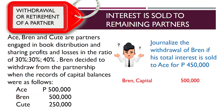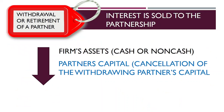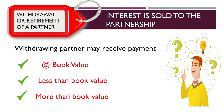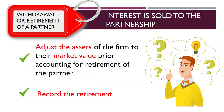But if the interest of the withdrawing or retiring partner is sold to the partnership, it will result in the reduction of the firm's assets — either cash or non-cash — along with the cancellation of the withdrawing partner's capital. The withdrawing partner may receive payments at book value, less than book value, or more than book value. The accounting procedure is: first, adjust the assets of the firm to their fair market value; and lastly, record the retirement.